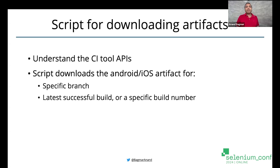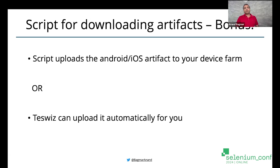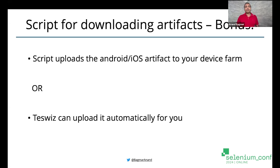Many times you want to run your test against the artifact from a particular build, not the latest one. When you are able to download this artifact, the script itself can upload the artifact to the device farm and make it ready for use in your test framework. I've seen a lot of teams check in artifacts in their repository and use that for execution — that's a very bad idea. You should never be checking in artifacts like APKs or IPAs as part of your source code repository. Binaries and such artifacts do not belong in version control systems. Downloading the artifact at runtime when required is a very important capability.